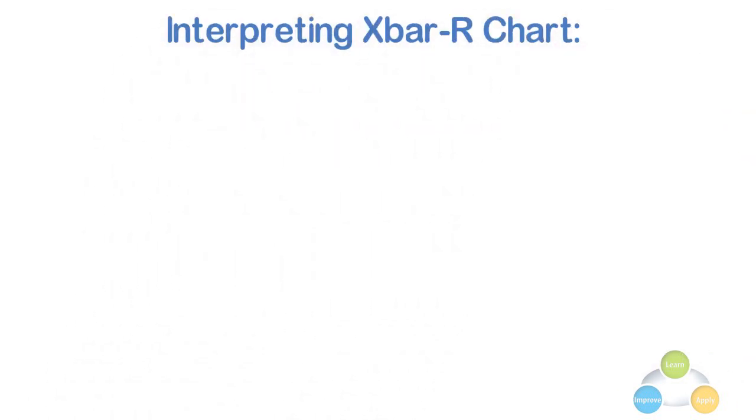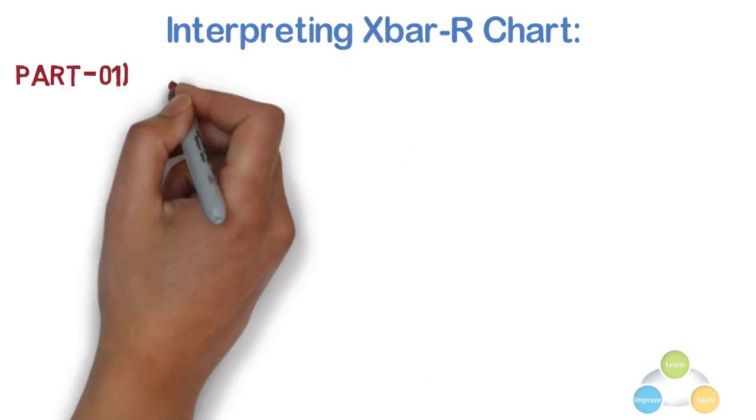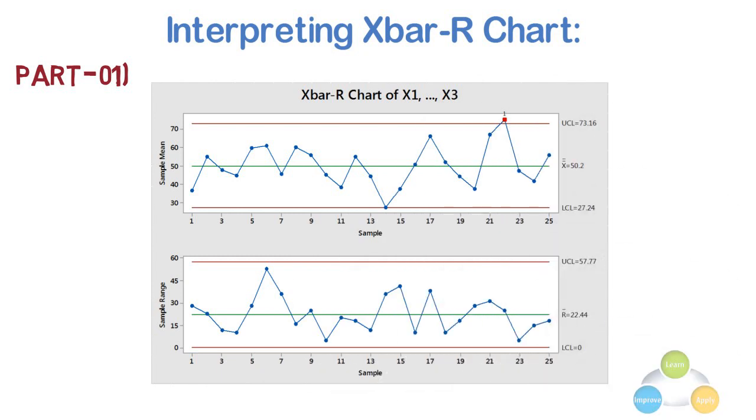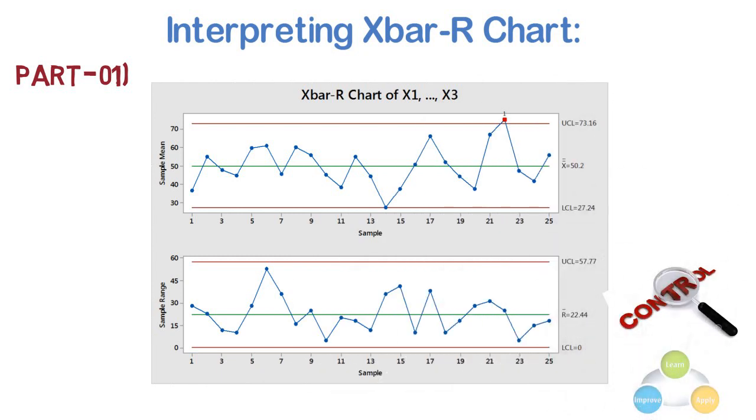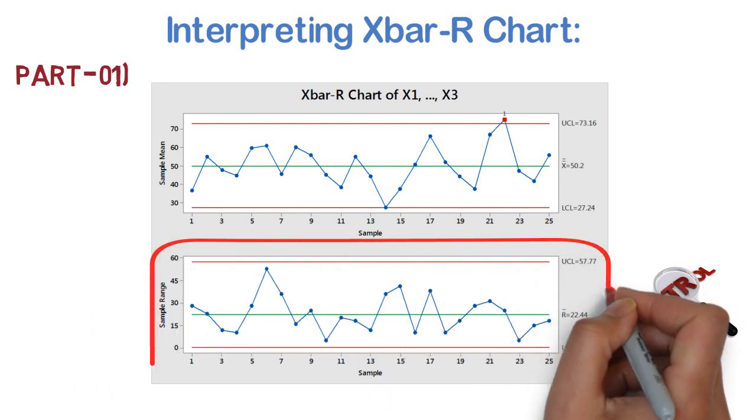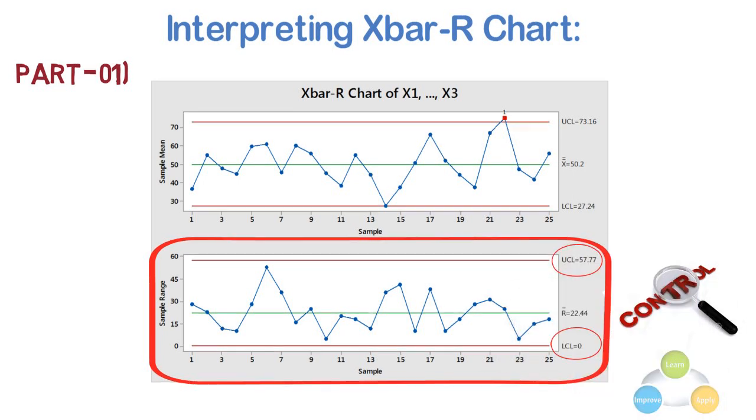Interpreting the X bar R chart. Part 1. Look at the R chart first because if the R chart shows that the process variation is not in control, then the control limits on the X bar chart are inaccurate. The R chart in the above example shows that the process variation is in control. No points are out of control, and all the points fall within the control limits in a random pattern, having lower control limit as 0 and the upper control limit as 57.77.